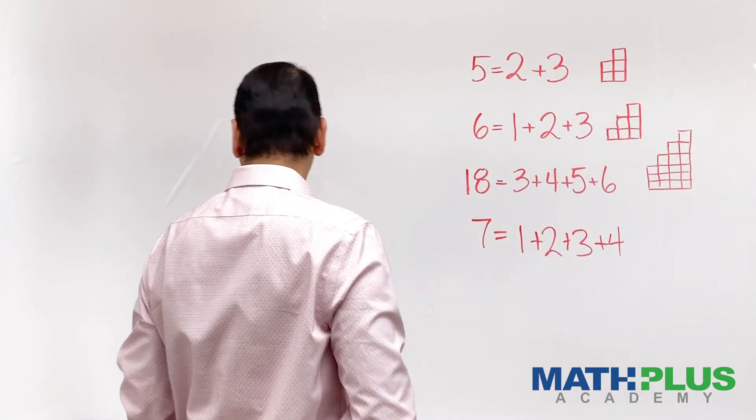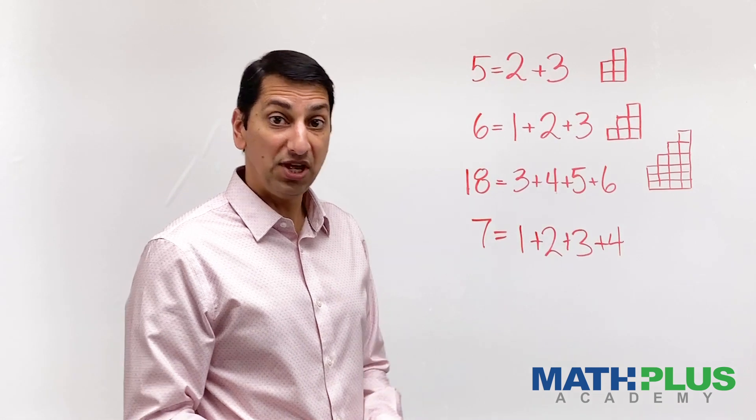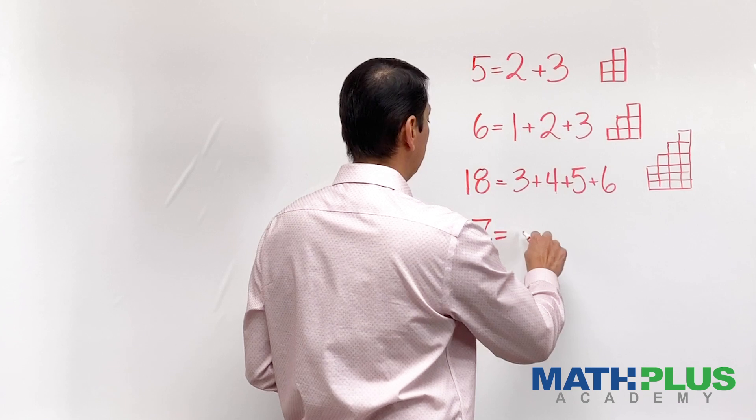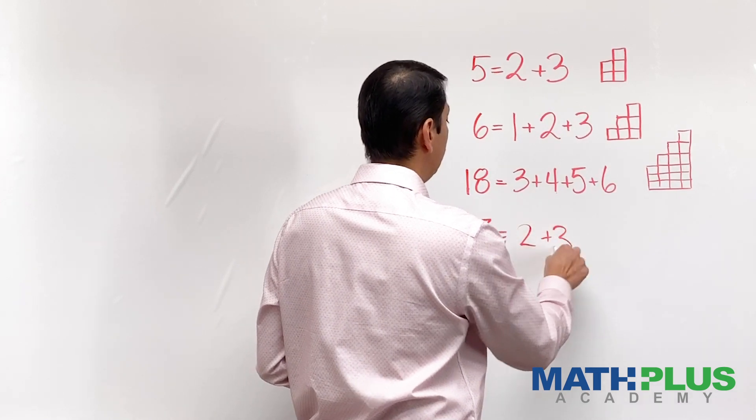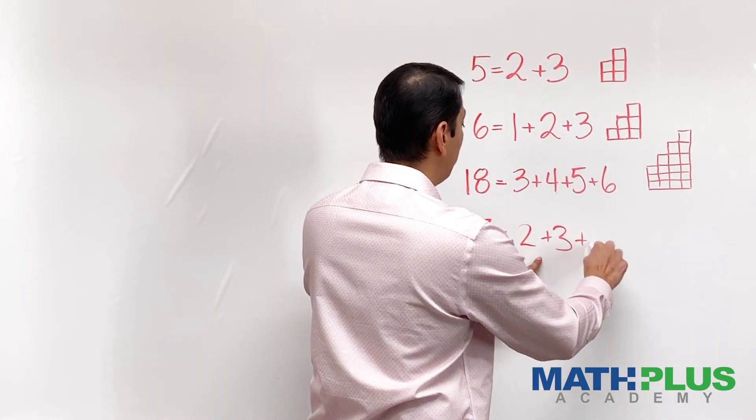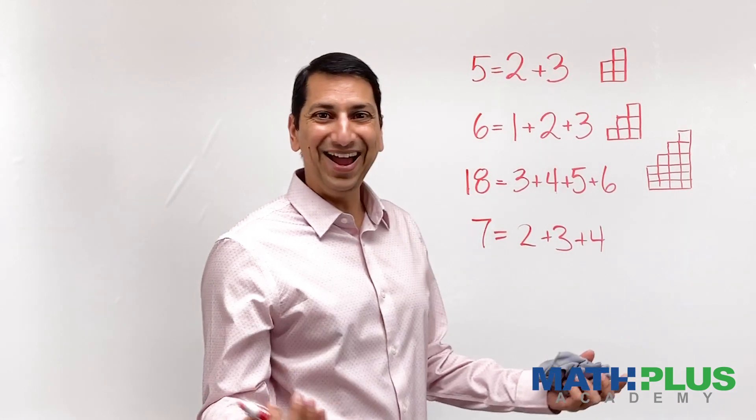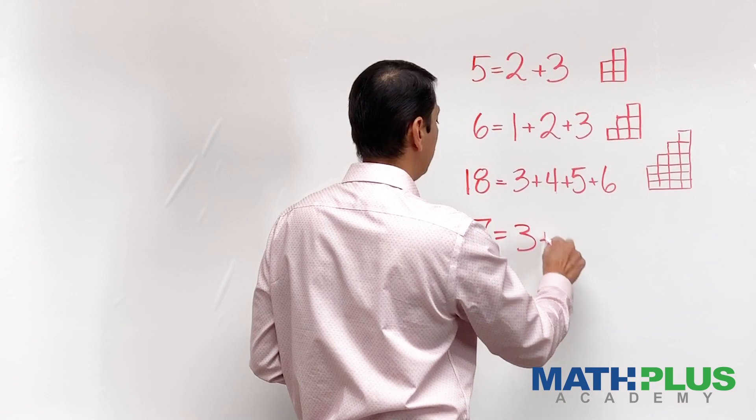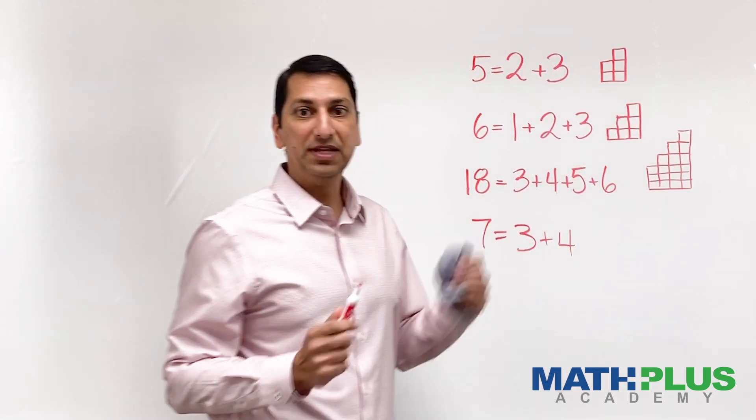Ah, that's 10. That's a little too big. So let me try something different. Maybe I don't want to start at 1. Maybe I start at 2. 2 plus 3. That's 5. I'd need a 4. Ah, that's 9. That didn't work. All right, let me try starting from 3. Boom! There it is.